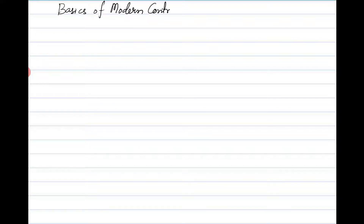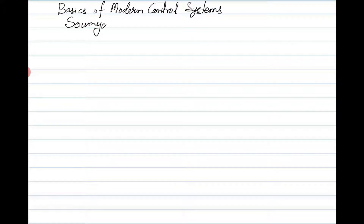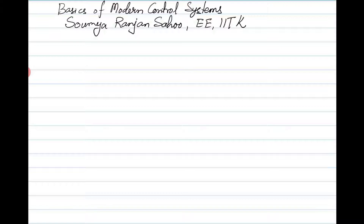Welcome all to the course titled B6 of Modern Control Systems. I am Somerenyan Sahu, with the faculty of the Department of Electrical Engineering at IIT Kanpur, associated with the Control and Automation Group. This is a basic course offered at IIT Kanpur for M.Tech and PhD students, as well as undergraduate students who are interested.